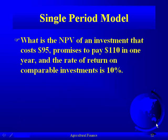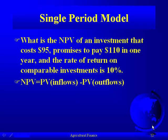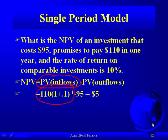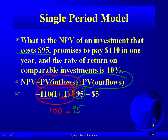What is the net present value of an investment that costs $95 but pays $110 in one year, when we can earn 10% on our money? NPV equals the present value of cash inflows minus the present value of cash outflows. The present value of the $110 inflow discounted at 10% is $100. The present value of the cash outflow is $95 — since we're paying it today, no discounting is needed. So NPV = $100 − $95 = $5. Our profit over and above the required 10% return is $5.